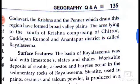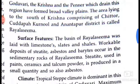The Krishna and the Pennar rivers drain this region and have formed a broad area of highly fertile land. The area lying to the south of Krishna, comprising Chittor and Anantapur districts, is called Rayalaseema.